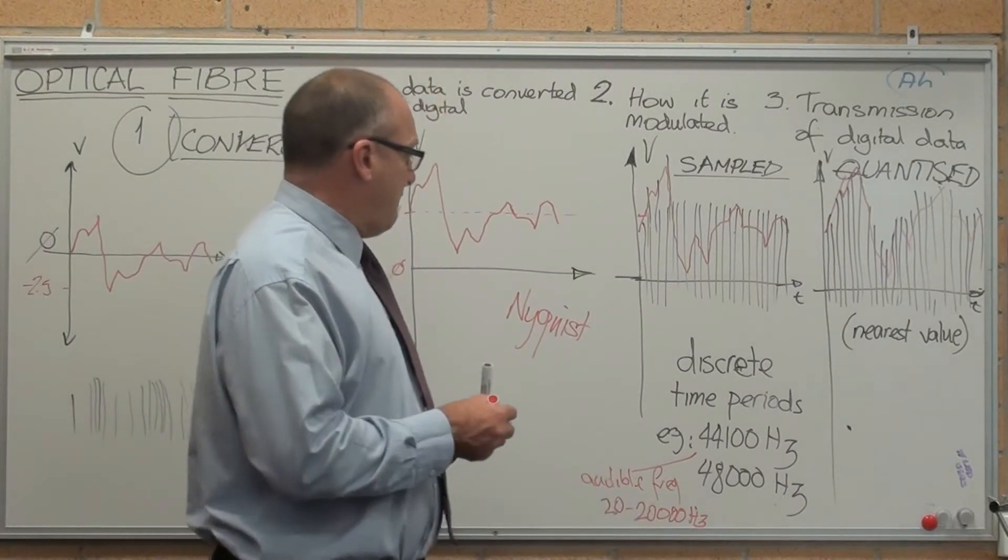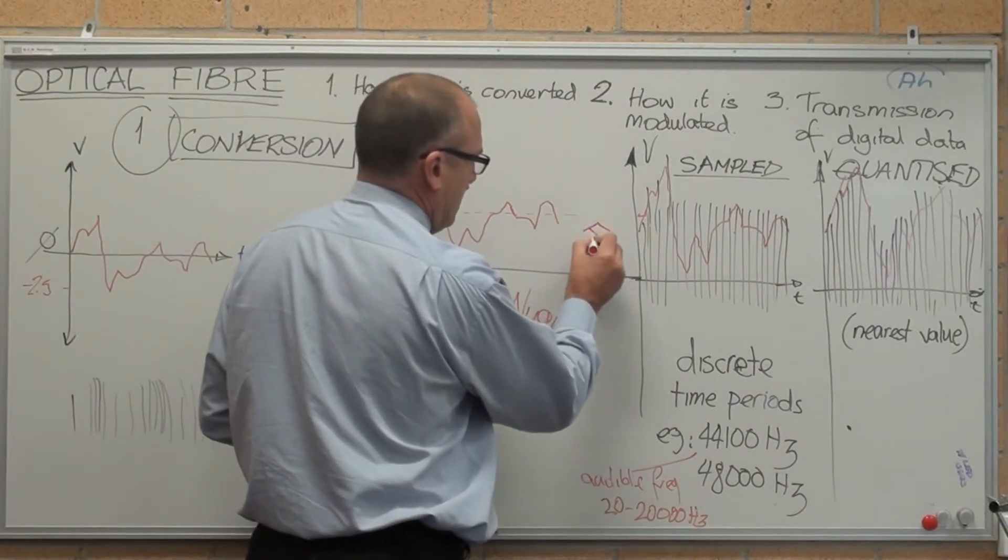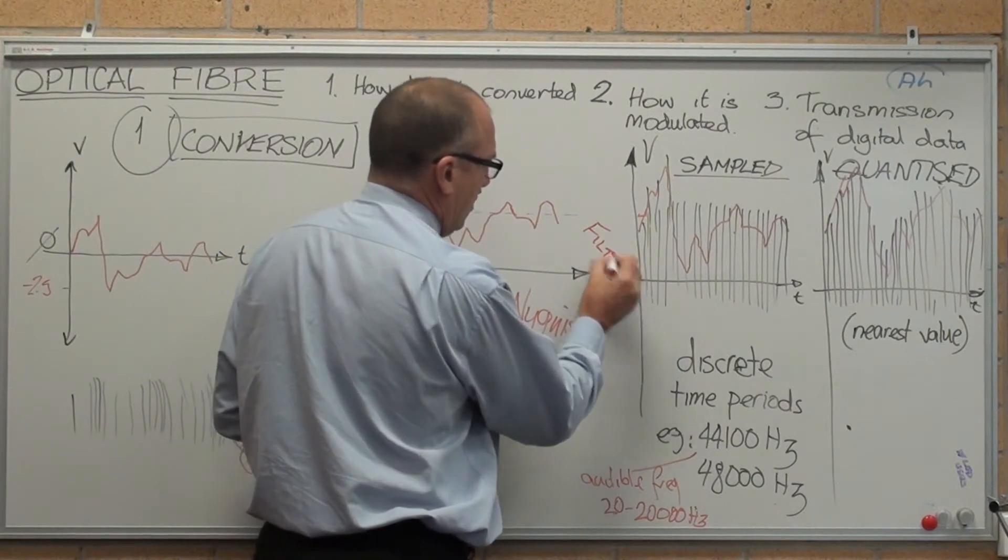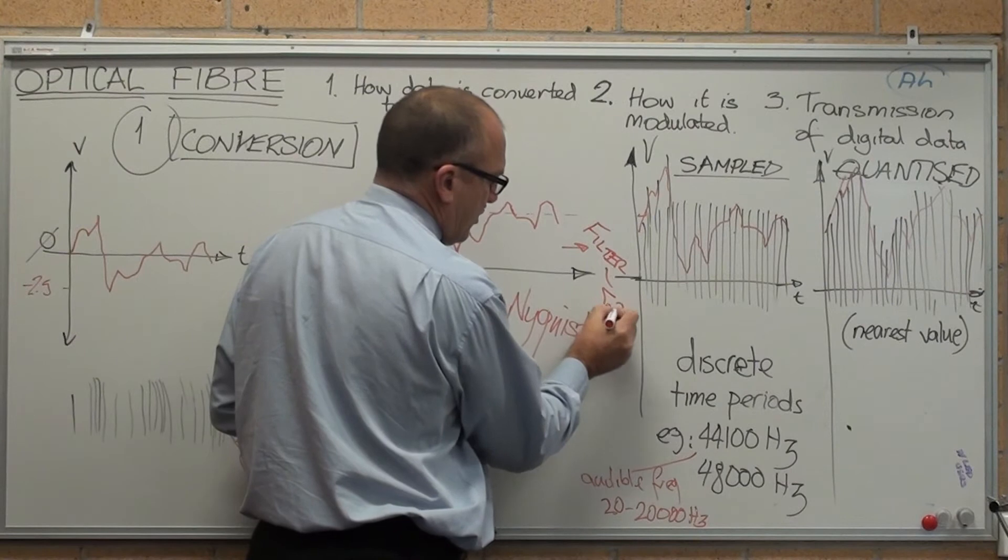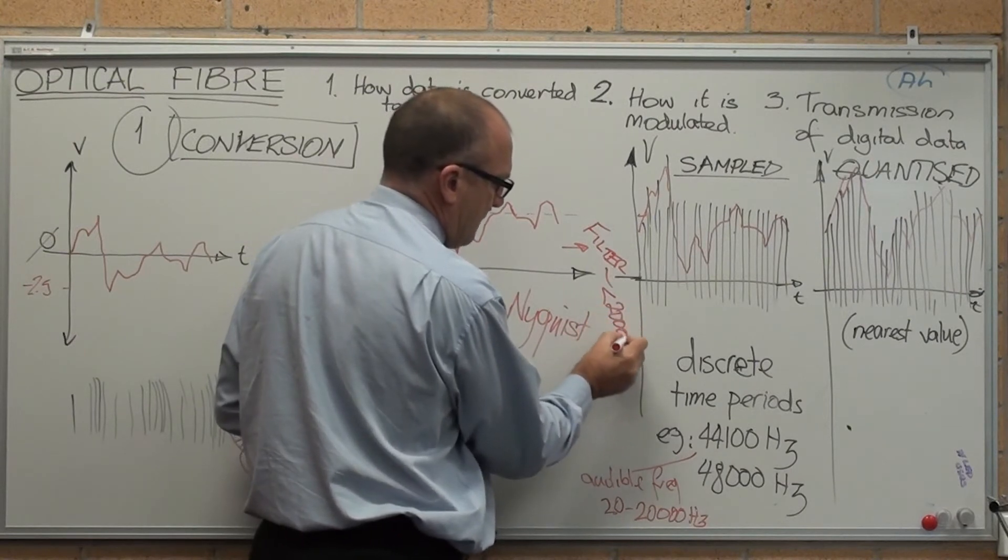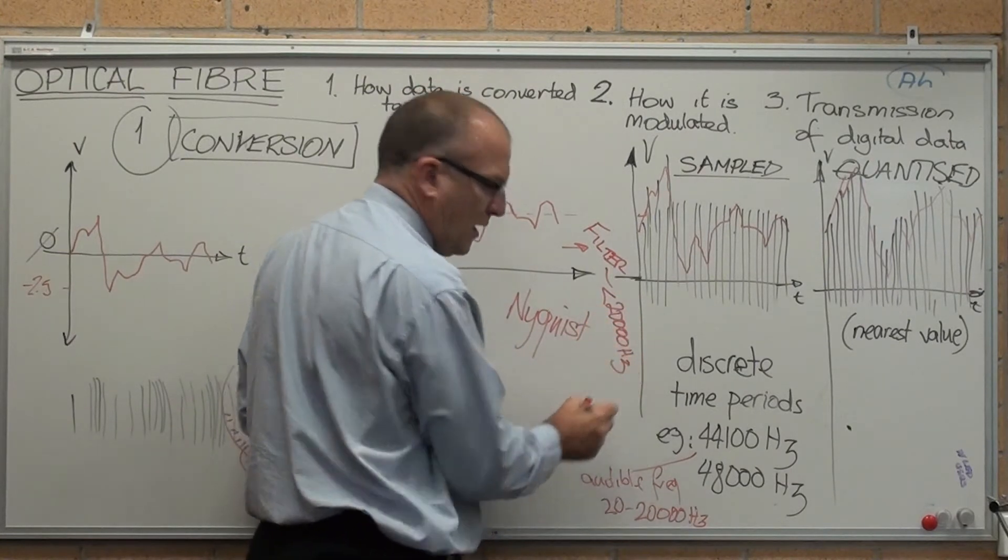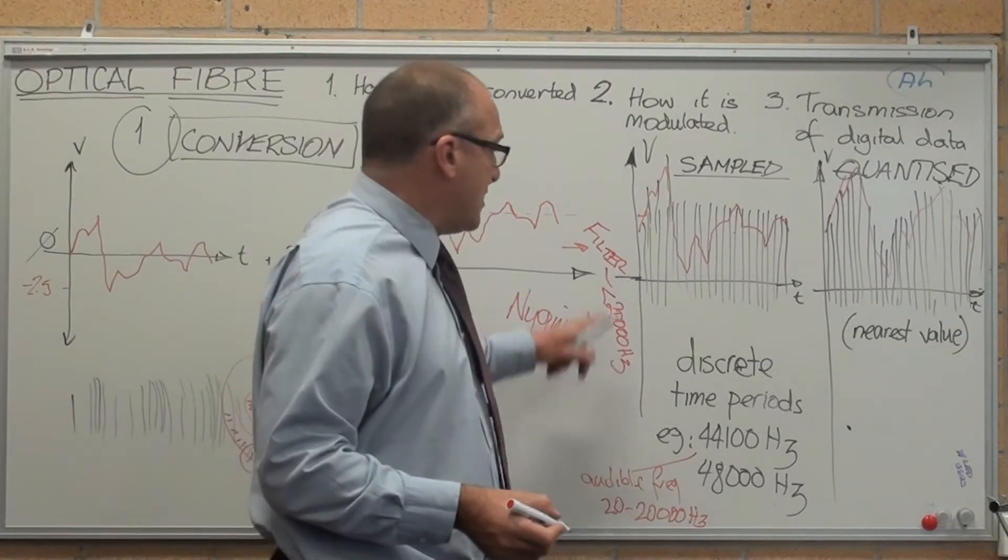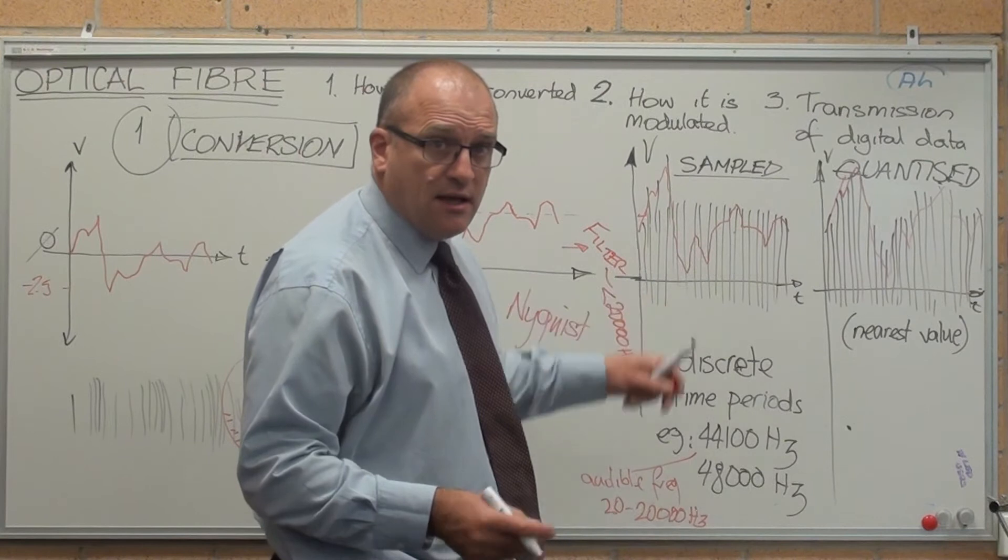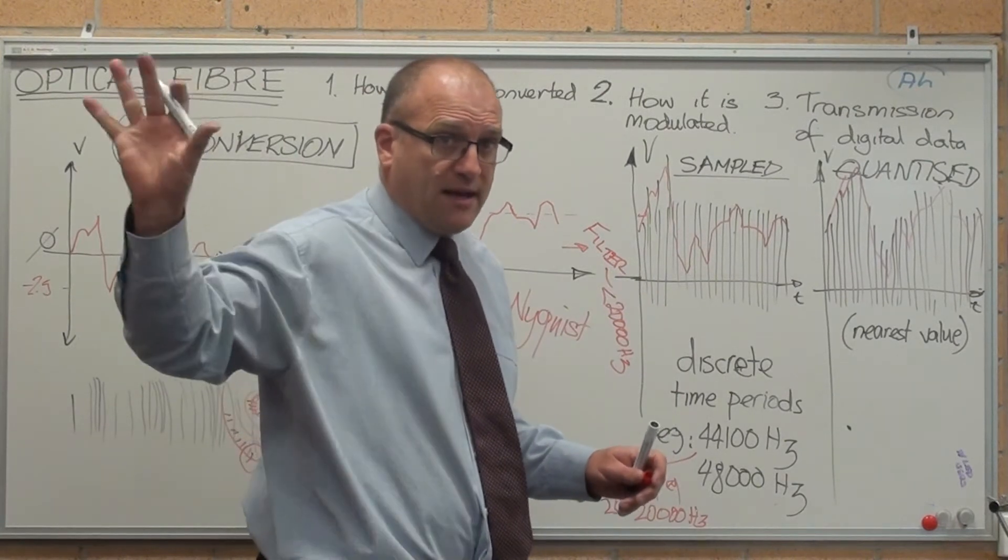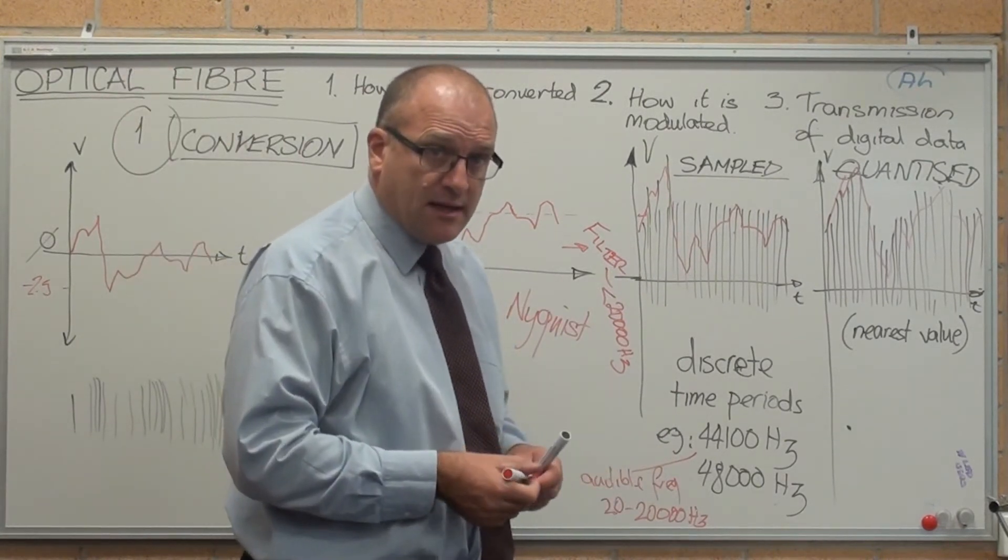So we filter the signal and remove everything greater than 20,000 Hz. Only everything less than 20,000 Hz gets passed to the signal processor. Any high frequency sounds automatically get thrown away because the human ear can't hear them.